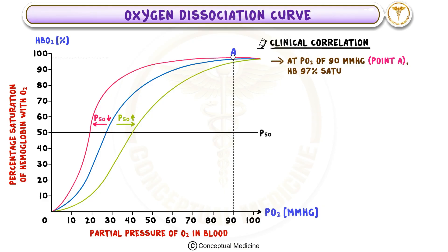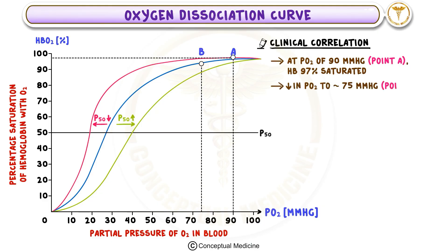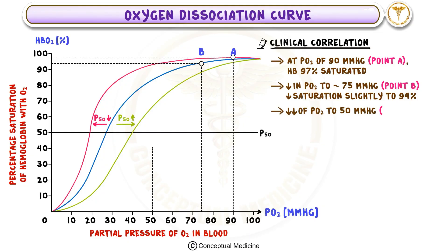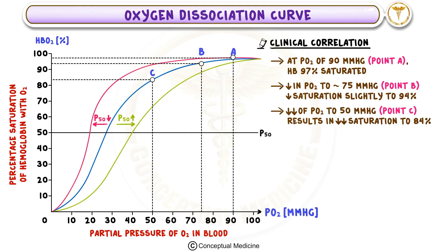Clinically, at a PO2 of around 90 mmHg, hemoglobin is approximately 97% saturated, ensuring efficient oxygen transport from the lungs. A moderate drop in PO2 to 75 mmHg only slightly reduces saturation to 94%, maintaining oxygen supply to vital organs. However, when PO2 decreases further to around 50 mmHg, saturation drops more significantly to 84%, promoting oxygen release to tissues in hypoxic conditions. This adaptive mechanism is vital for maintaining oxygen delivery across varying physiological states and is fundamental to understanding respiratory physiology.